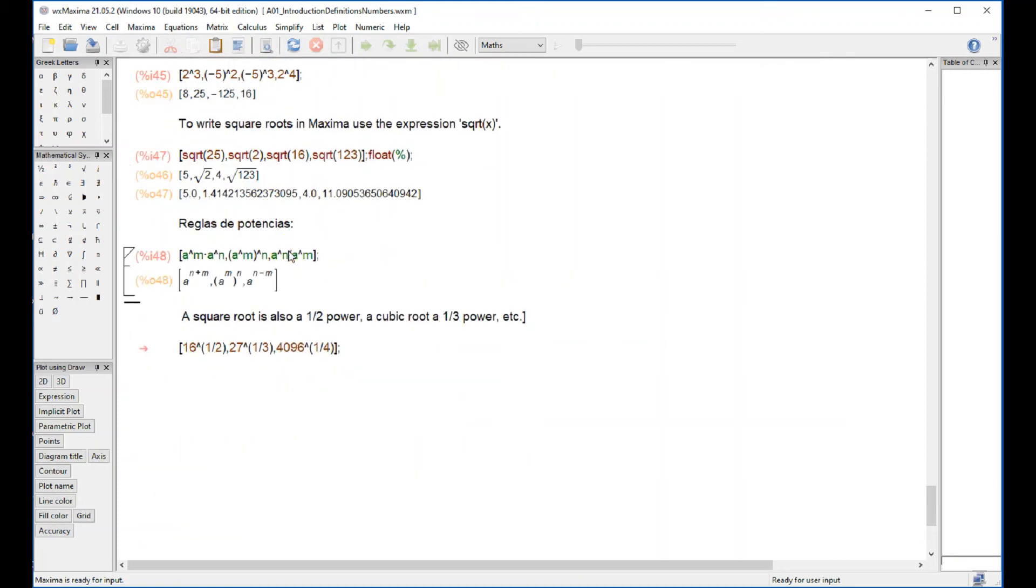The square root is written as sqrt. Rules of powers - I wrote it in Spanish here, it should be roots of powers. a^n times a^m is a^(n+m). a^m raised to the n is a^(m×n). And division would be a^(n-m). The square root is also a half power. The cubic root is one-third power and so on.